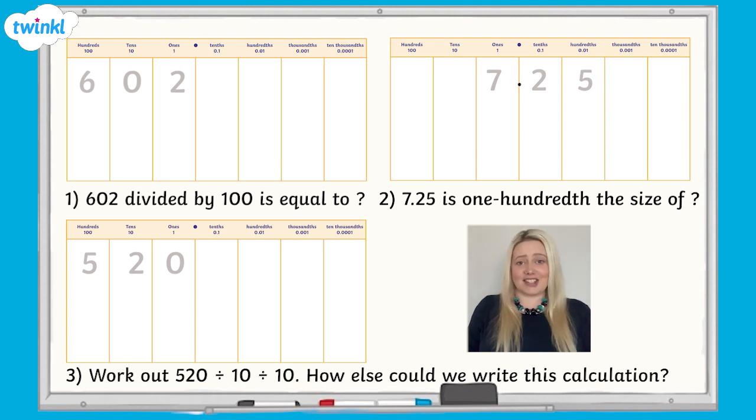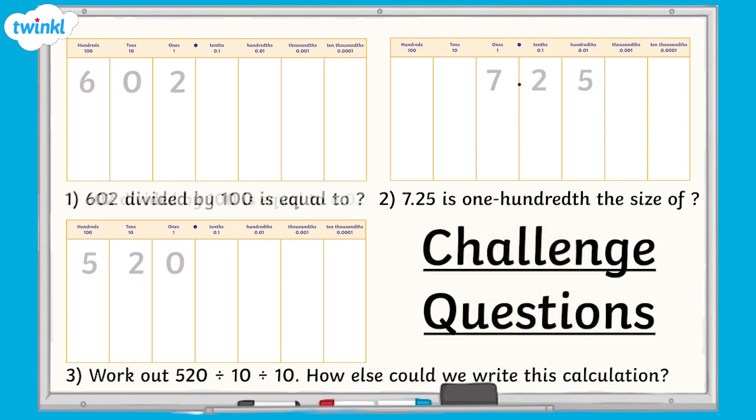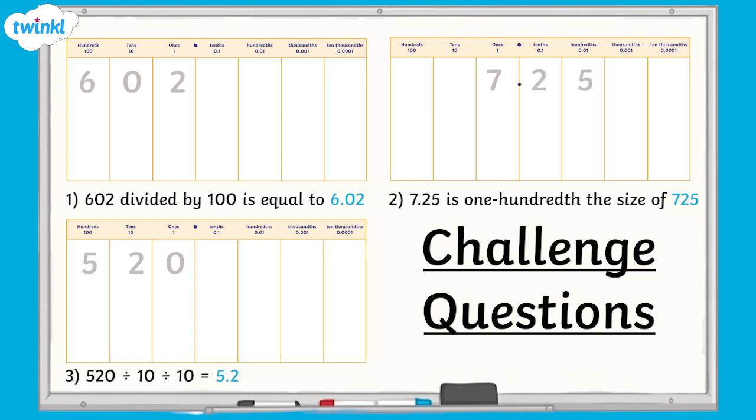Time to check your answers. The answer to question 1 was 6.02. The answer to question 2 was 725. The answer to question 3 was 5.2. And the other way you could write the calculation was 520 divided by 100.